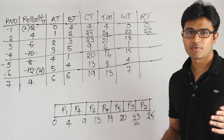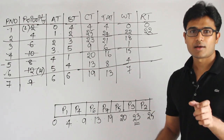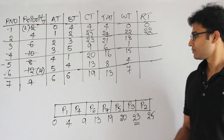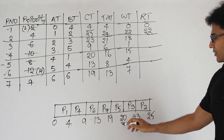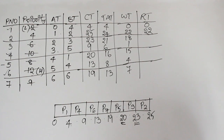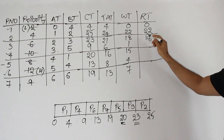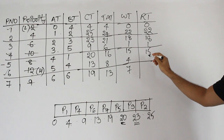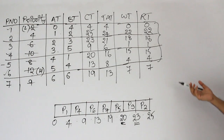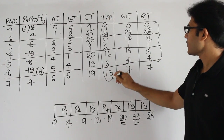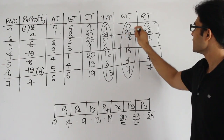In preemptive scheduling, waiting time can accumulate multiple times in the middle of execution, making it larger than response time. Response time is when the process is first scheduled, while waiting time accounts for all time spent waiting without getting executed. For non-preemptive algorithms, both values are equal. You can calculate the average turnaround time, average waiting time, and average response time from the values obtained.